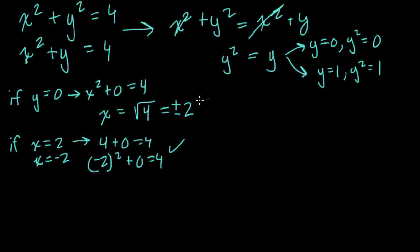We have, so far, the y value is 0. The x is 2 and 0, or negative 2 and 0. And we'll look at the graph in a moment to see why this makes sense. And that checks out for y equals 0.